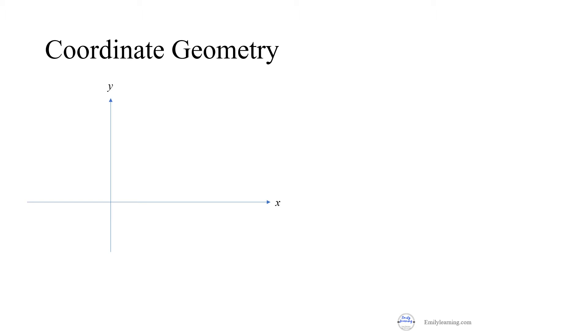In coordinate geometry, we learn quite a lot of things. One of them is the equation of a straight line, which is given by y equals mx plus c, where m is the gradient of the line and c is the y-intercept.